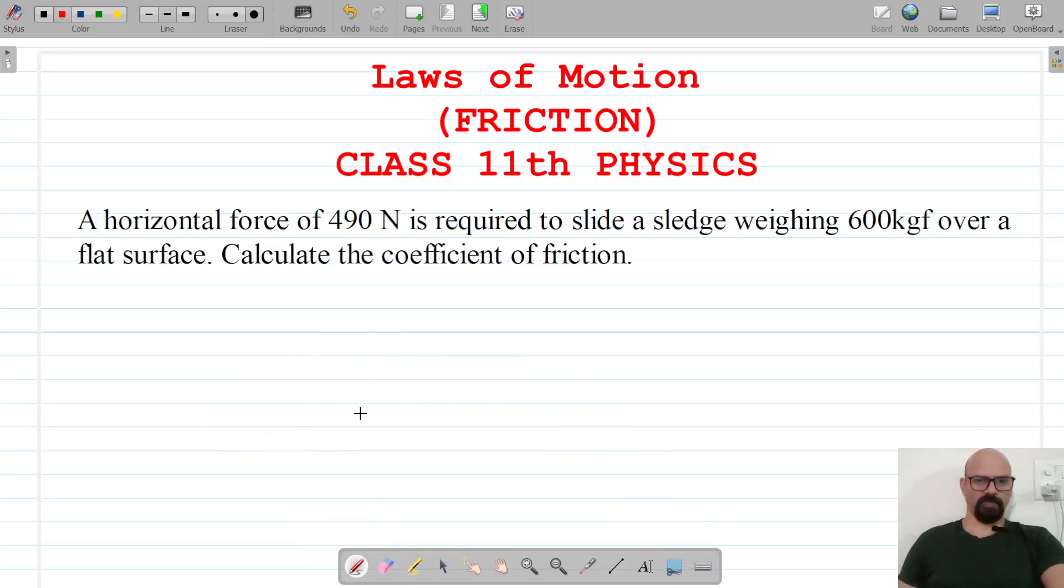The next question is: A horizontal force of 490 N is required to slide a sledge weighing 600 kgf over a flat surface. A sledge is something that we use to carry goods or luggage on ice, using draft animals that survive in cold regions.